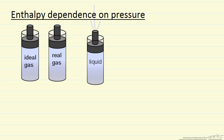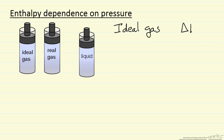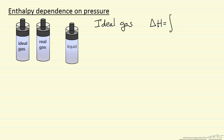Let's look at the ideal gas case first. For an ideal gas, there's no interaction between the molecules, so it doesn't matter that they're close together. We're not changing the enthalpy, and so the enthalpy change for an ideal gas only depends on temperature. If the temperature is constant, delta T is zero, then delta H is zero.